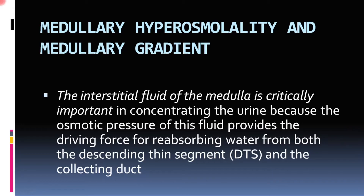The ability of the kidney to produce concentrated and dilute urine is because of a property present in the medulla of the kidney. The functional unit of the kidney is the nephron, present in the cortex and medulla which forms the renal pyramid. The medullary hyperosmolarity — that is, the interstitial fluid of the medulla having high osmolarity — is the most important factor responsible for giving the kidney the ability to concentrate or dilute the urine.